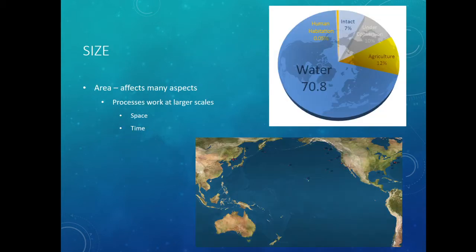Now, size — and we can think about size in many different ways. First off, area: 70% of our Earth is covered in water. What that means is that processes work at larger scales. So when we think across space and across time, anything that happens in an ocean takes forever.